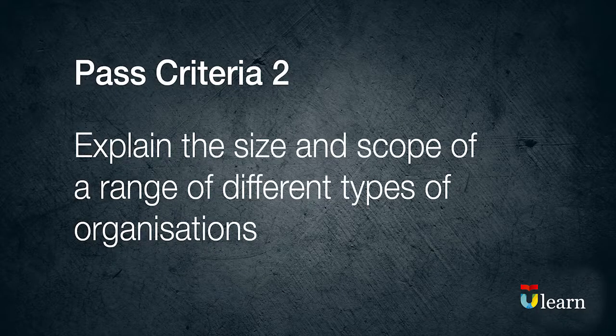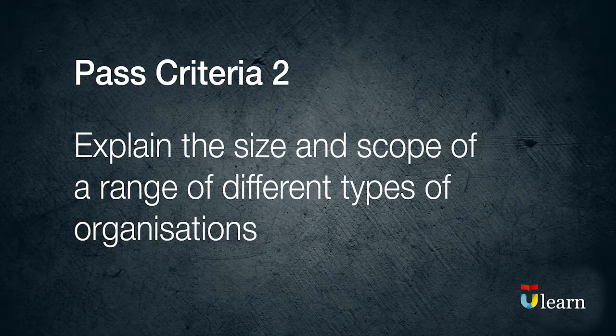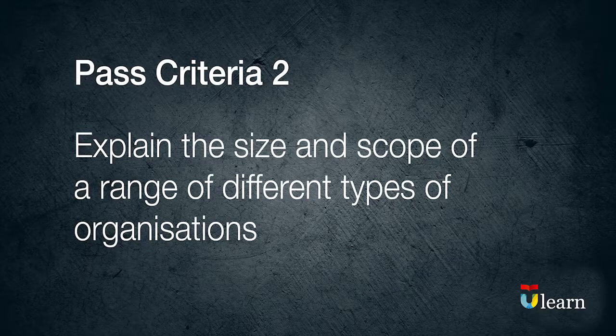Here is the second past criteria for Learning Outcome 1. You need to be able to explain the size and scope of a range of different types of organisations.